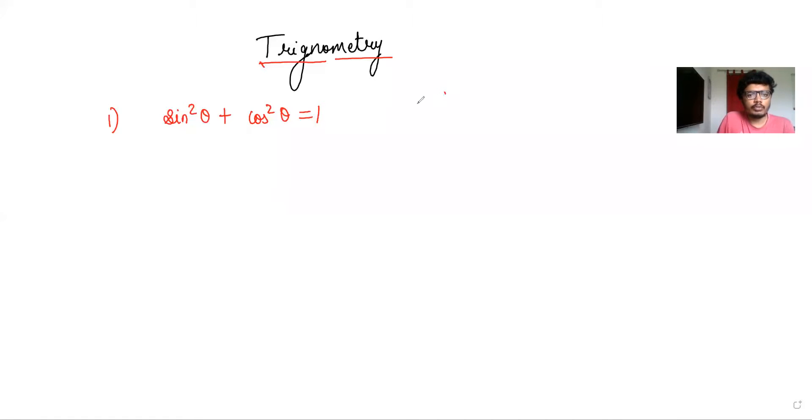Hello friends, in this short video I will prove an identity from trigonometry, which is basically sin²θ + cos²θ is equal to 1.